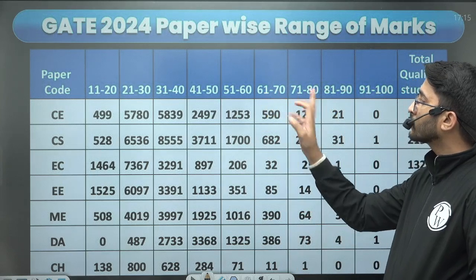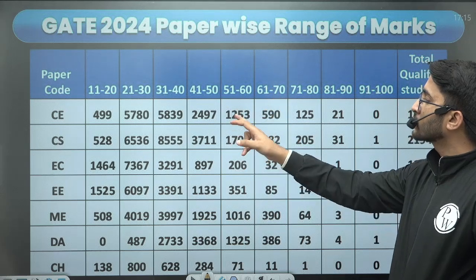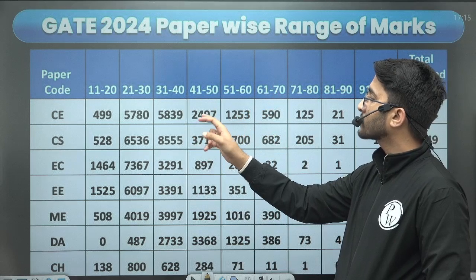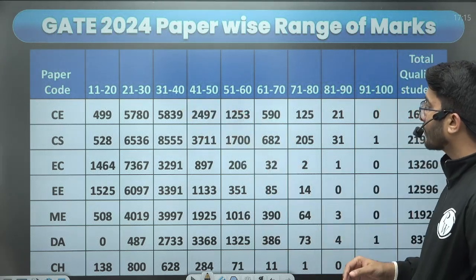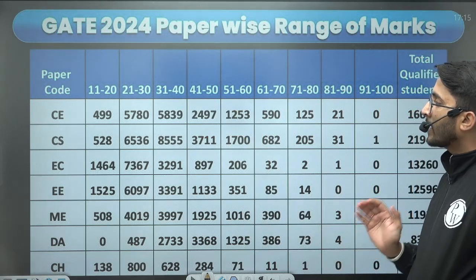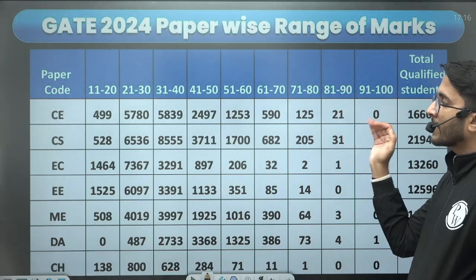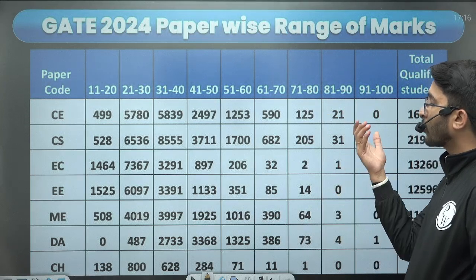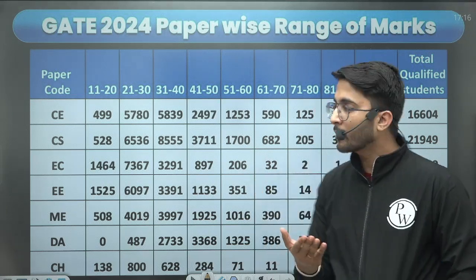From 61 to 70 marks, 590 students are there; 51 to 60 marks, 1253 students; and 41 to 50 marks, 2497 students. From this data you can get the idea that if you are able to secure marks above 85 plus, then you have a chance to secure a top 10 rank. Accordingly you can plan your preparations and attempt your paper.